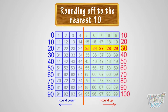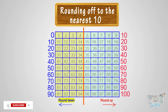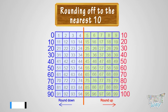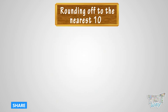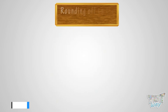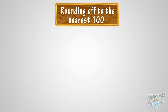So kids, we learned that in rounding off to the nearest 10, numbers are rounded down if they are below the 5 mark, and rounded up if they are on or above the 5 mark. Now let's learn what is rounding off to the nearest 100.